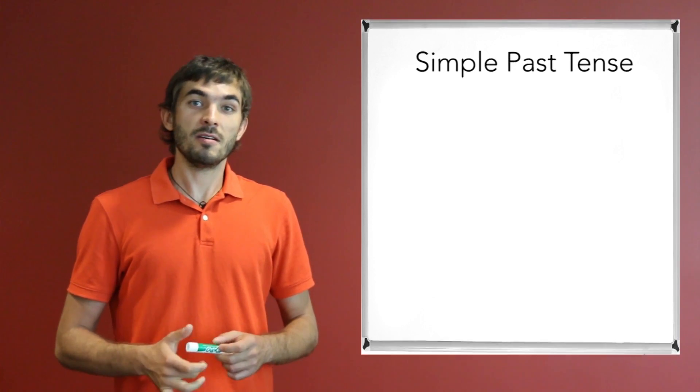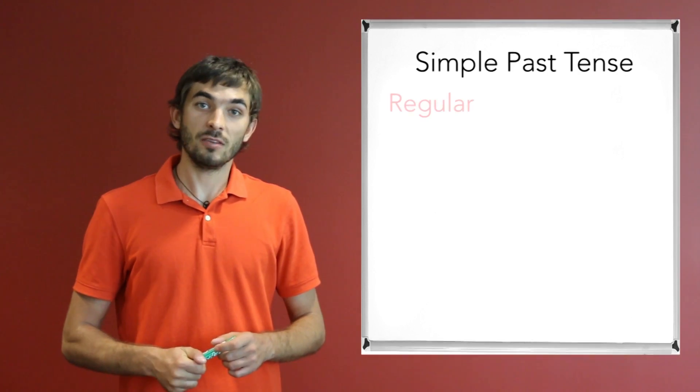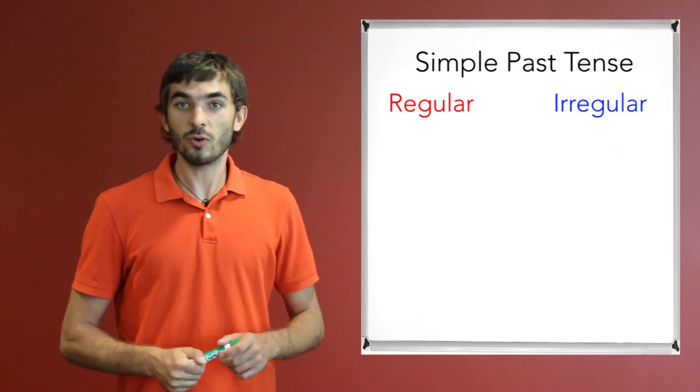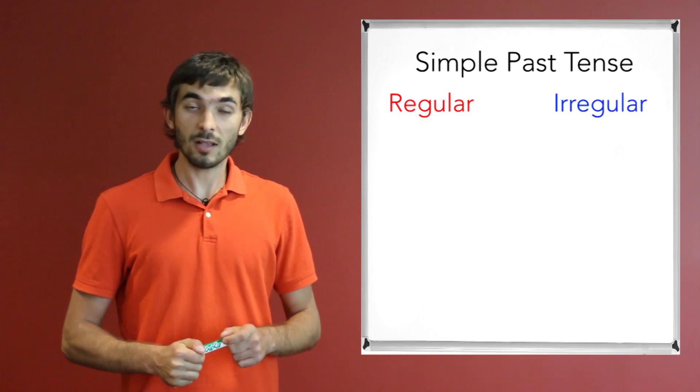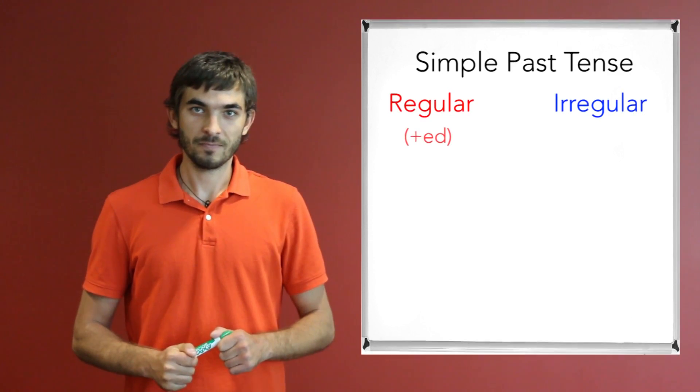And there are two types of verbs in English language. Regular verbs and irregular verbs. In order to form simple past tense with regular verbs, we use the suffix '-ed'. Alright?